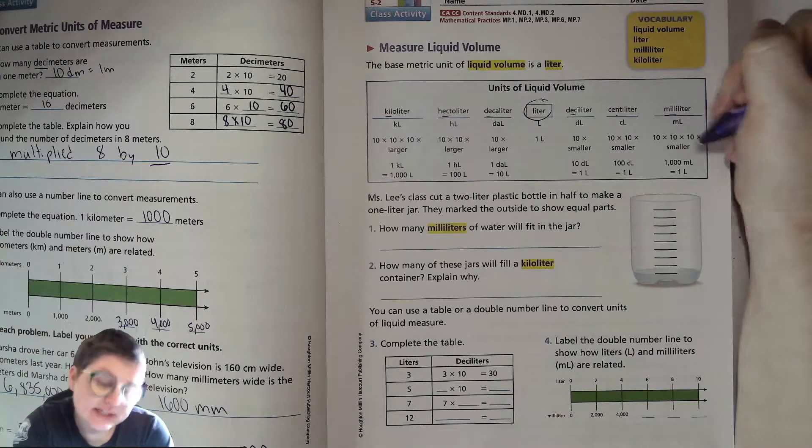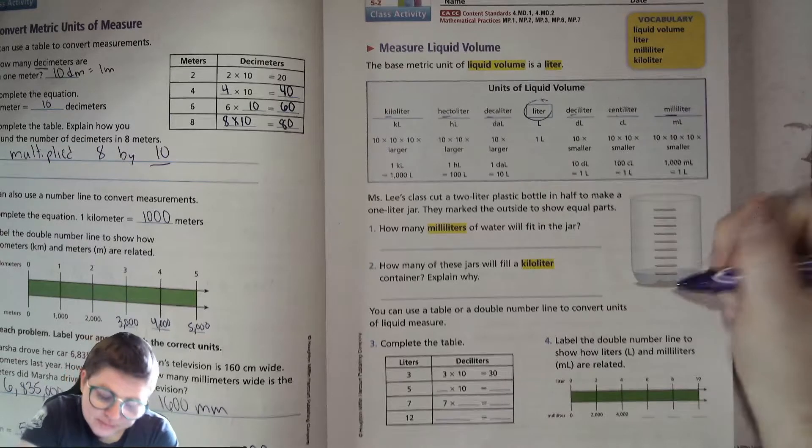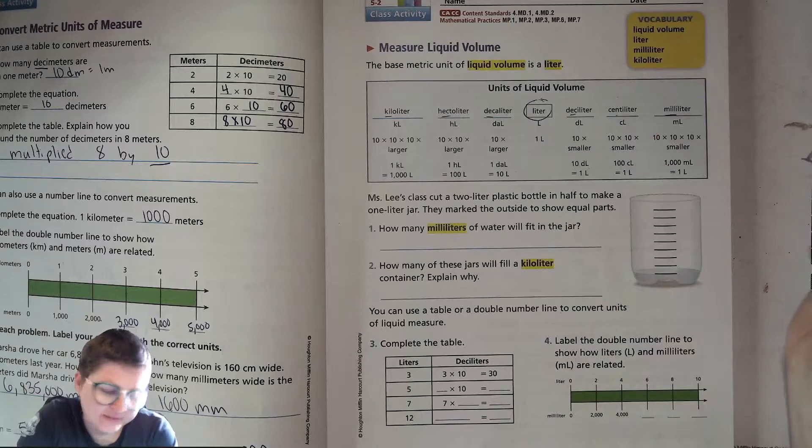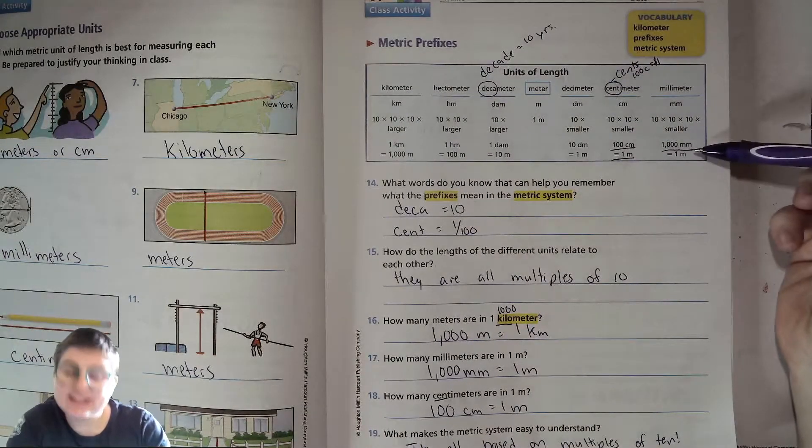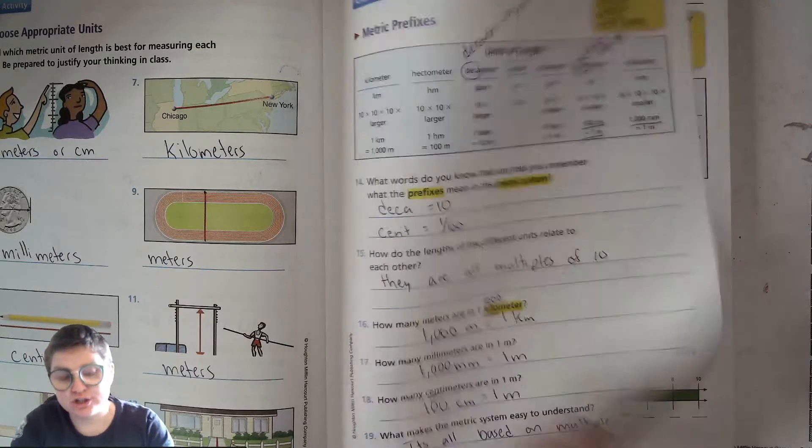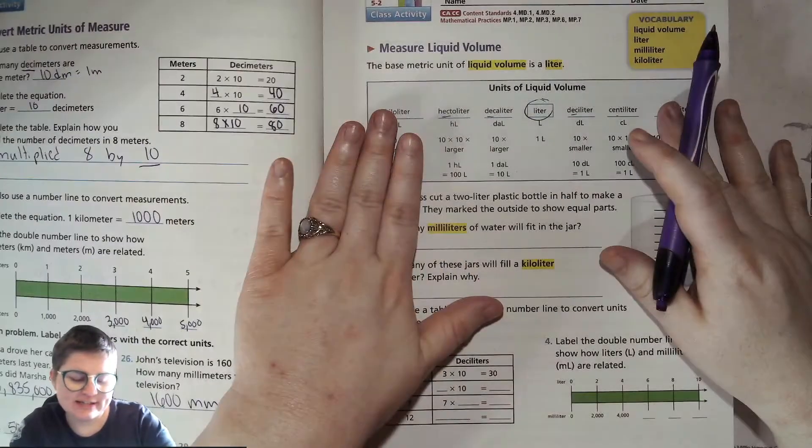And then you can apply all these different prefixes, like how there's a milliliter, and that's a little teeny tiny little bit, a thousandth of a liter, in the same way that a millimeter is a thousandth of a meter.